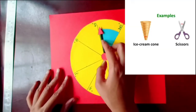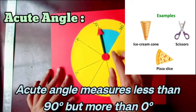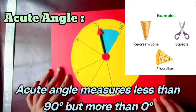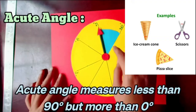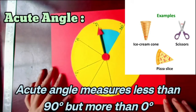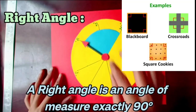The first one is acute angle. Acute angle measures less than 90 degrees and more than 0 degrees. For example, ice cream cone, scissor, and pizza slice.